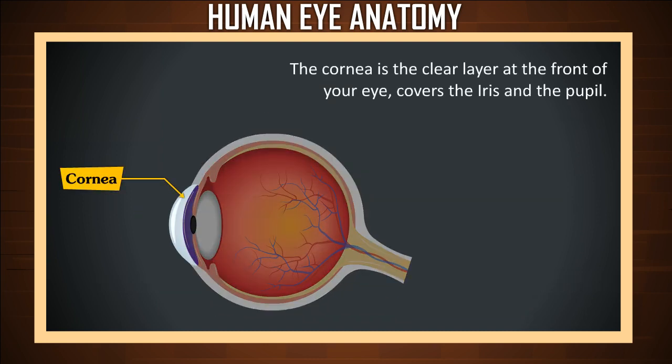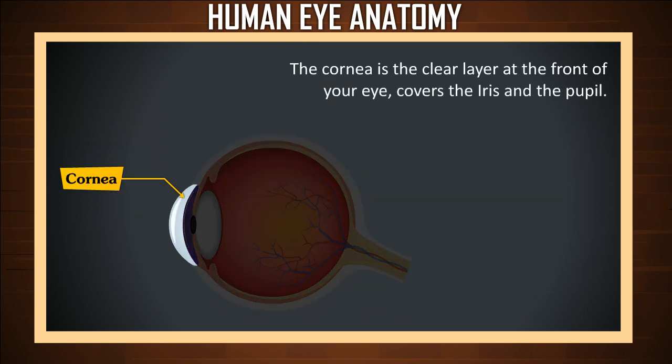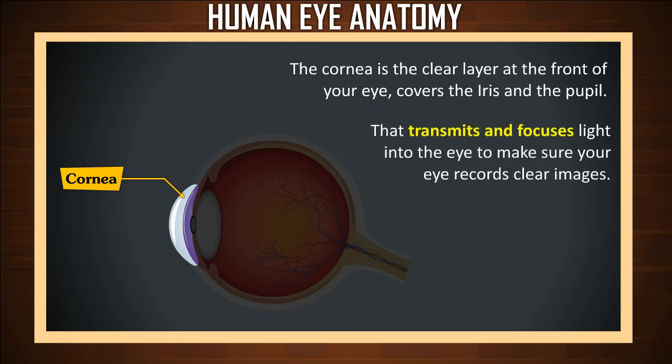Cornea. The cornea is the clear layer at the front of your eye that covers the iris and the pupil. It transmits and focuses light into the eye to make sure your eye records clear images.